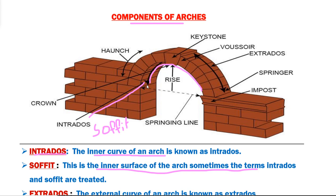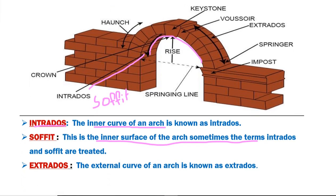The next component part is extrados. Extrados is the external curve of an arch. In this image, this is the external curve. This external curve of an arch is known as extrados. So, the internal curve of an arch is known as intrados or soffit, and the external curve is known as extrados.